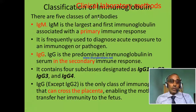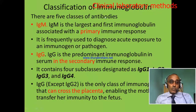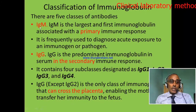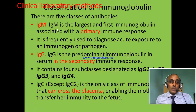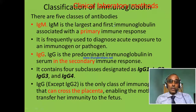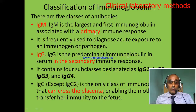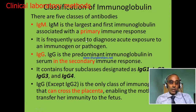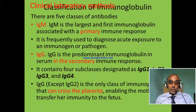Classification of immunoglobulin. There are five classes of antibodies or immunoglobulin. The first one is IgM, or immunoglobulin M. Immunoglobulin M is the largest or pentamer antibody, and it is also the first immunoglobulin produced during primary immune response. It is frequently used to diagnose acute exposure of an individual to pathogens.